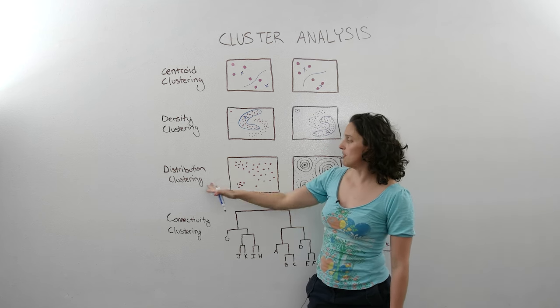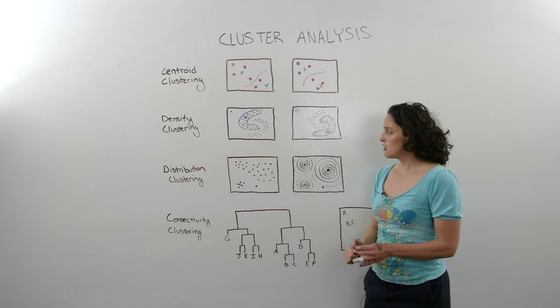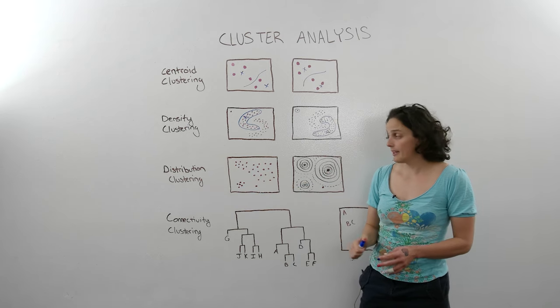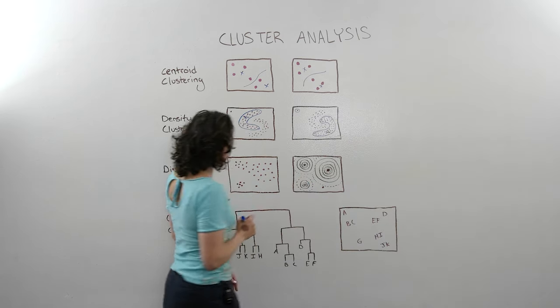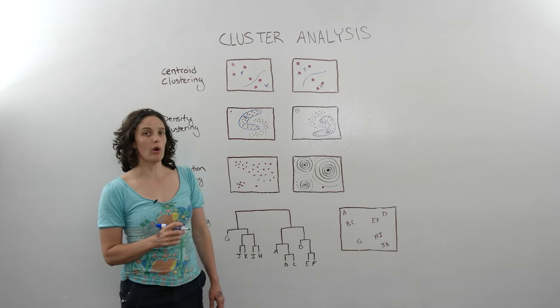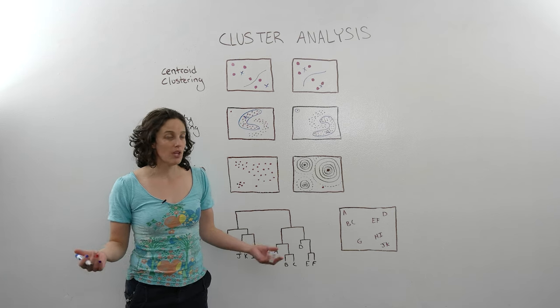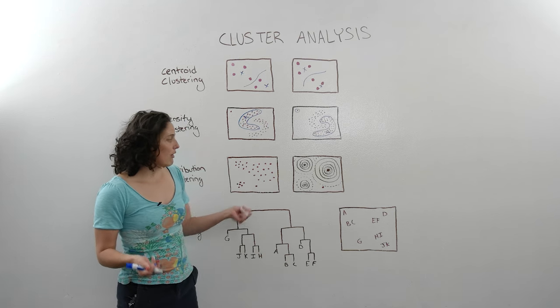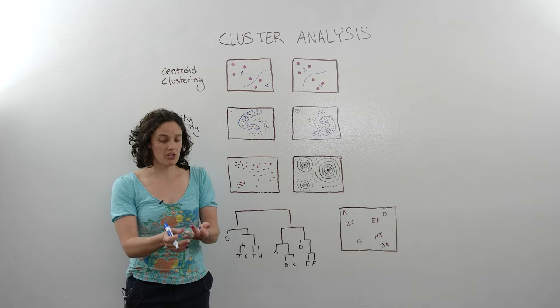Let's move on to distribution clustering. Distribution clustering is a pretty interesting technique. It basically looks at the probability that a particular point belongs to a cluster. So we know that we want three clusters: dog, fish, and cat people.